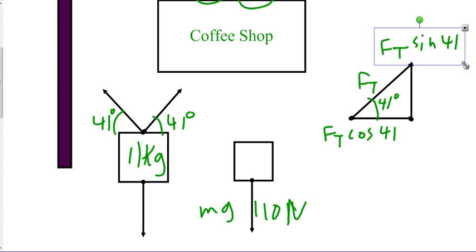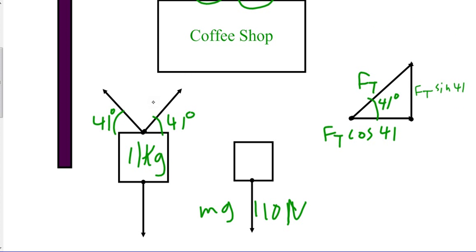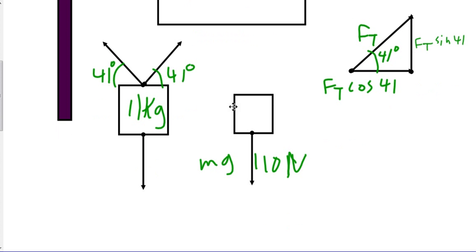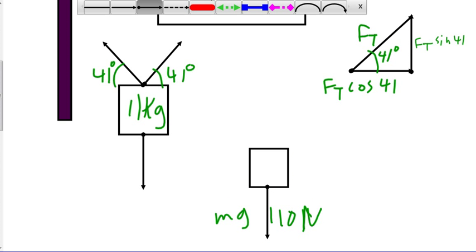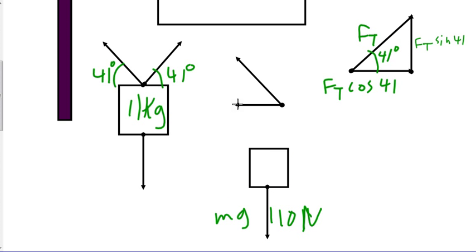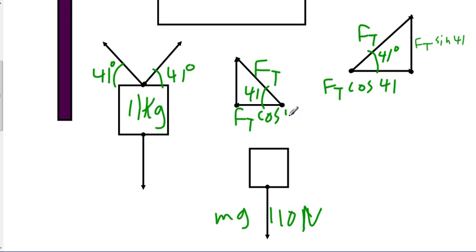This will be for the vector on the right. The vector on the left will be exactly the same. If we draw the other non-perpendicular vector, you'll see that the triangle looks very similar. This is also FT, the force of tension, and again we have 41 degrees. So the x component is again FT cosine 41, and our y component is again FT sine 41.